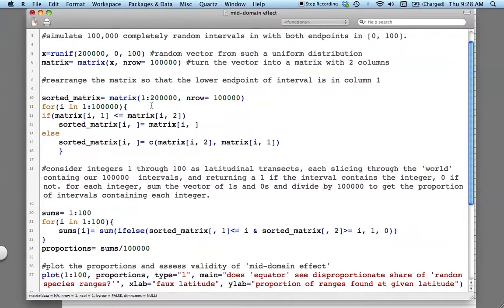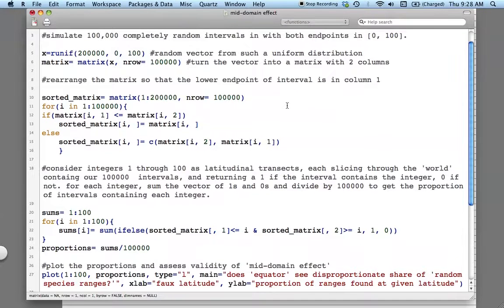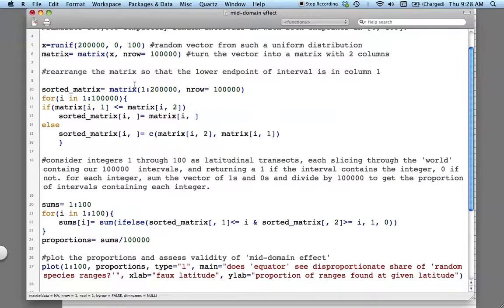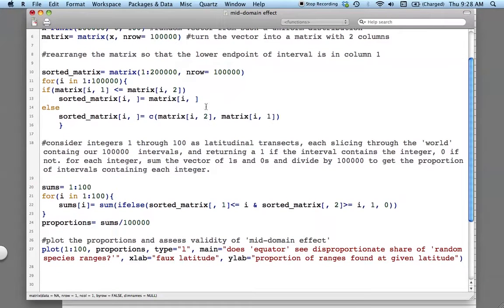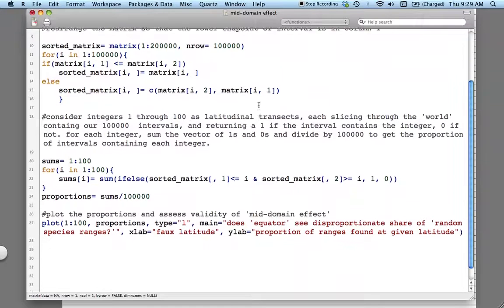Now, the problem is that the way I've made it, there's absolutely nothing to say that the first number, that the number in the first column matrix is going to be smaller than the other number. And so, for coding it, that can become kind of a pain in the butt. So, what I did is I took this matrix and I've basically said that if the first number is the smaller of the two, then leave it alone, and if the second number is the smaller of the two, just swap the numbers in that row. And so, I run through all 100,000 rows of the matrix and do that.